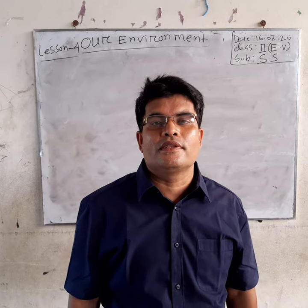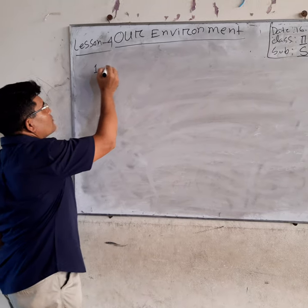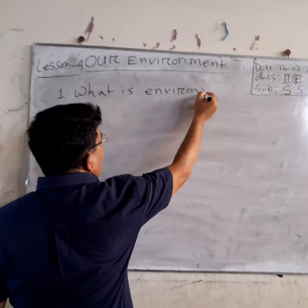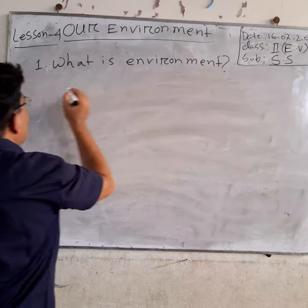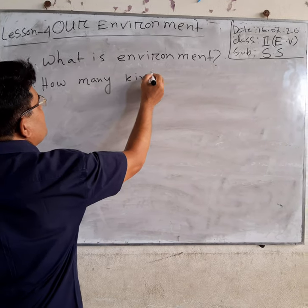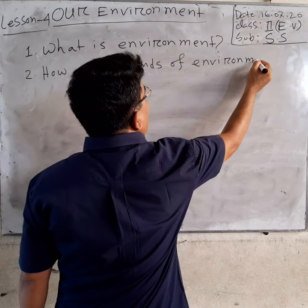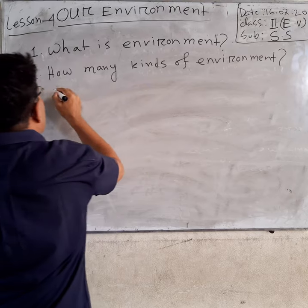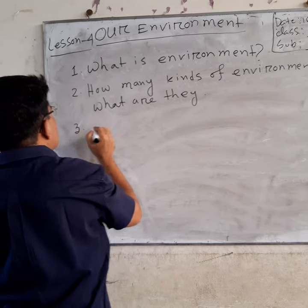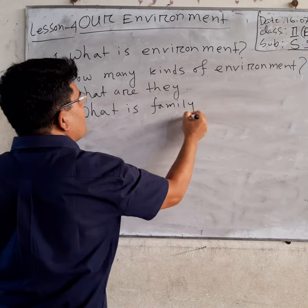After discussing the topics, we can tell the following question and answer. Number 1: What is Environment. Number 2: How many kinds of environment? What are they? Number 3: What is Family Environment.